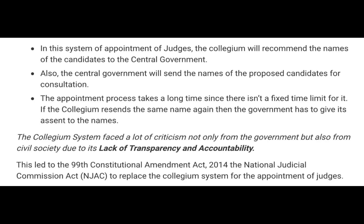In the collegium system, the collegium recommends the names of candidates to the central government. The central government also sends names of candidates for consultation, and this process takes a long time. If the collegium reiterates the same name, then the government has to give its consent. Differences of opinion arose between the collegium and the government, and the system faced criticism due to lack of transparency and accountability.